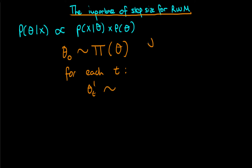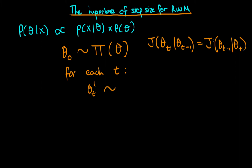In random walk metropolis, this jumping kernel satisfies a symmetry condition: the probability of proposing theta t given that we are at theta t minus one equals the probability of proposing theta t minus one given theta t. For continuous parameters this is a probability density. The typical distribution satisfying these properties is a normal distribution centered on the previous value, theta t minus one.